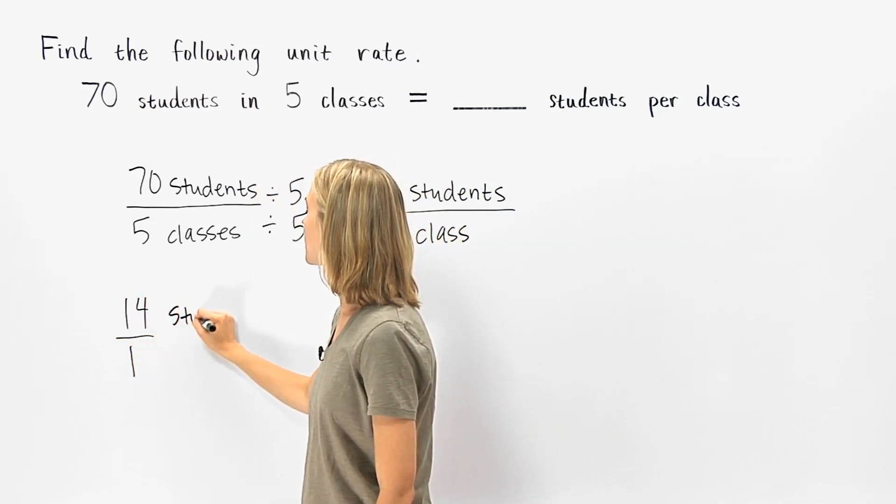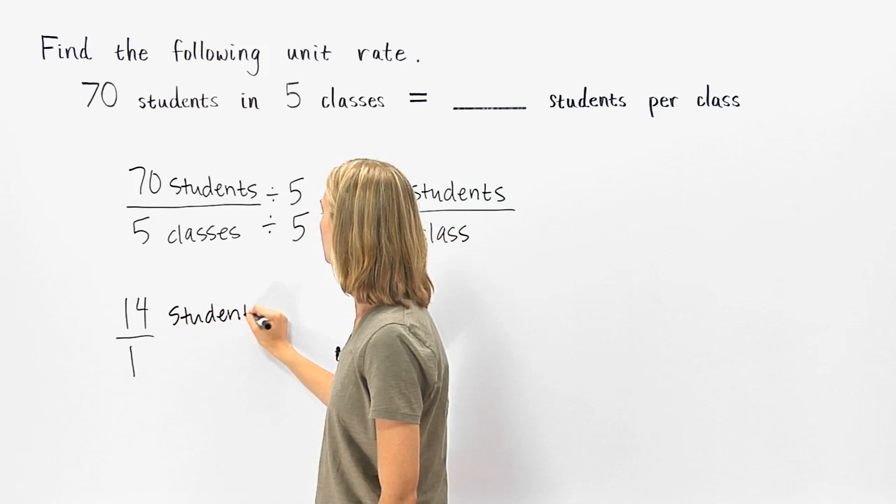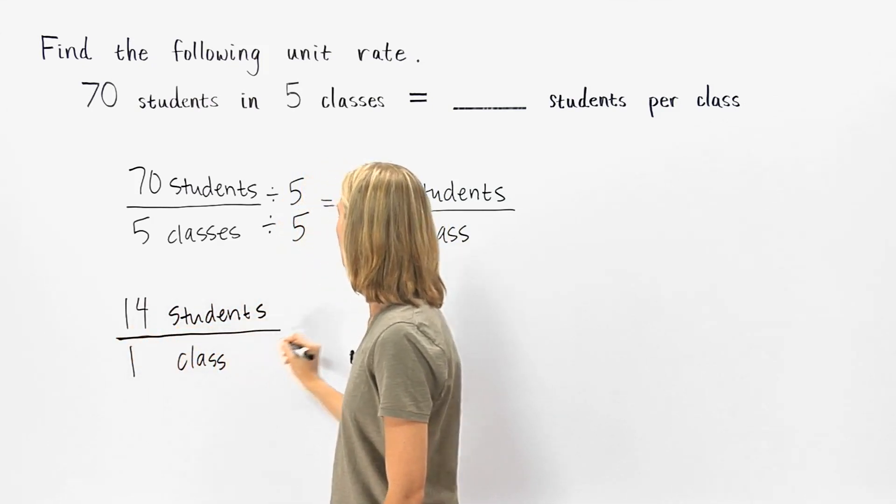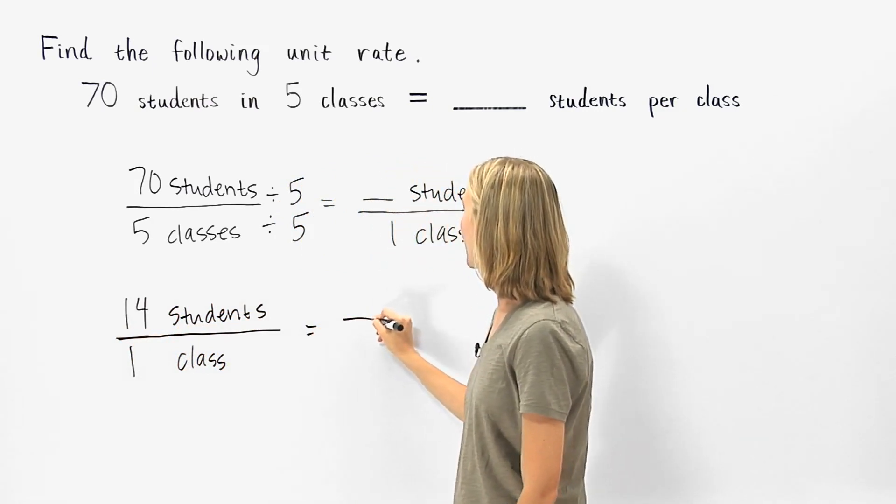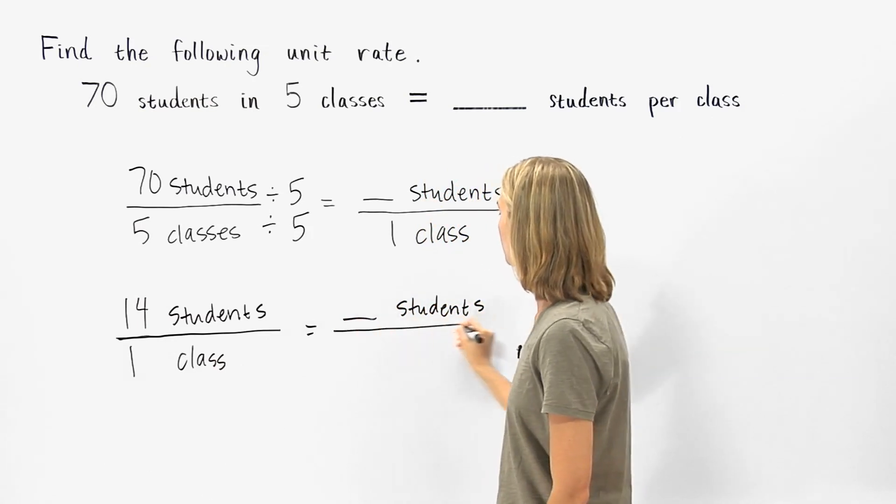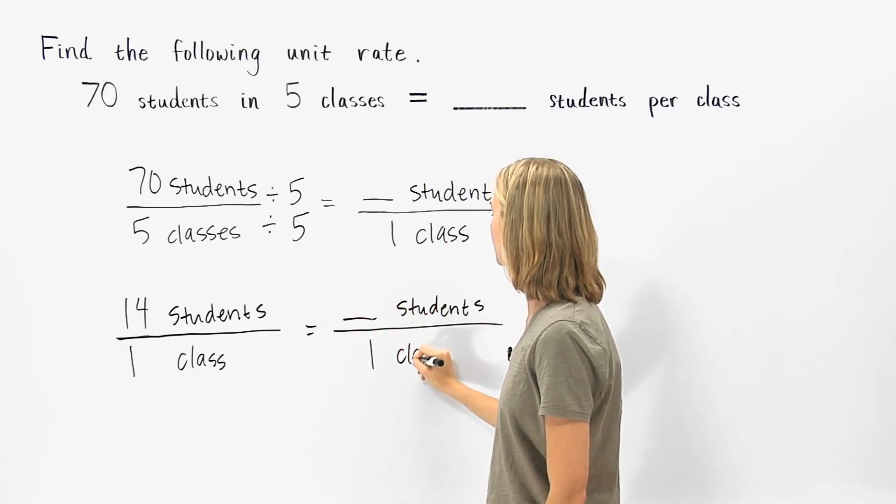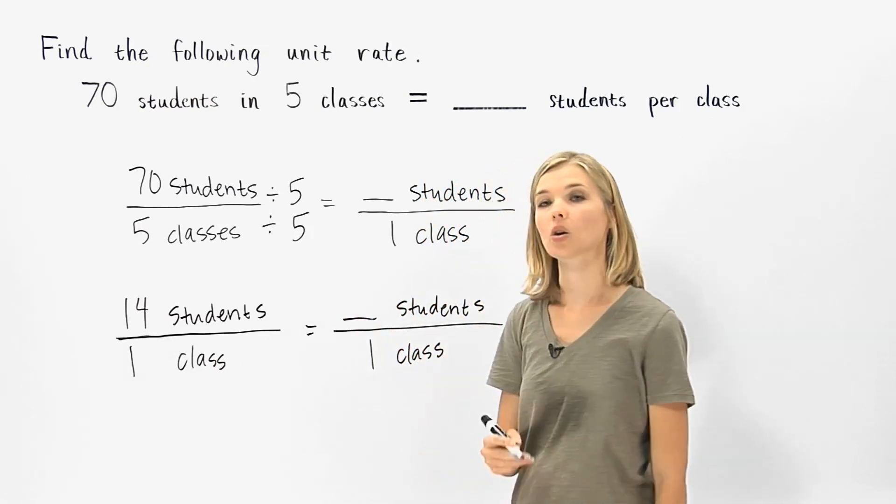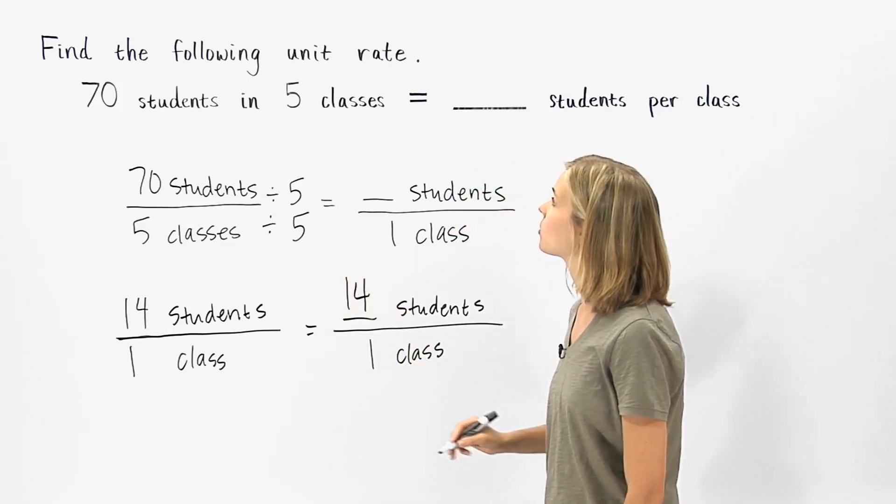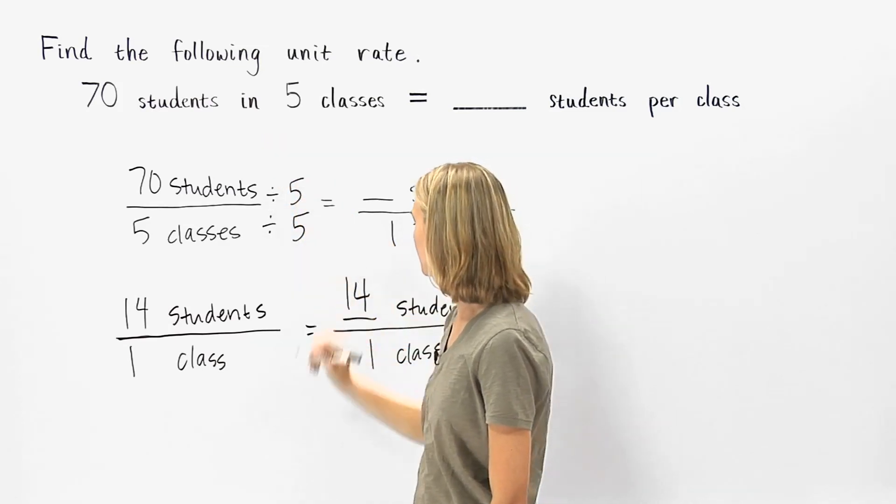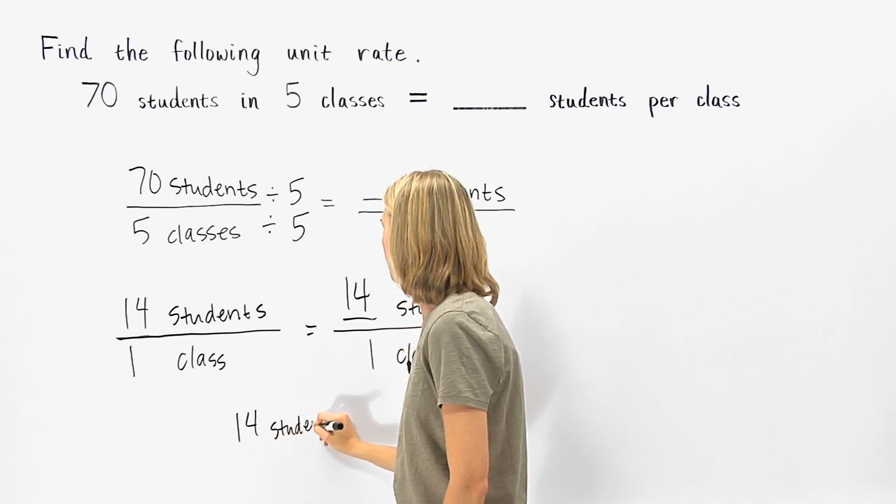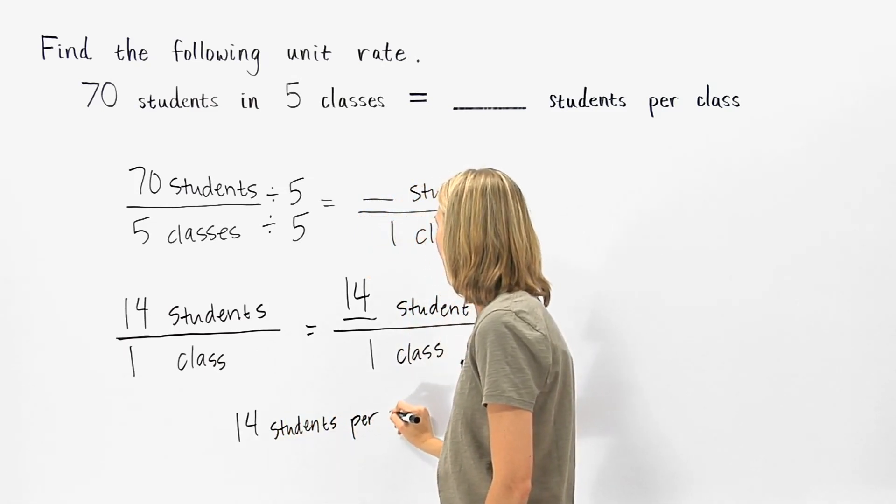So we have fourteen students over one class equals blank students over one class. So we can see that fourteen must go in the blank, which means that the unit rate for seventy students in five classes is fourteen students per class.